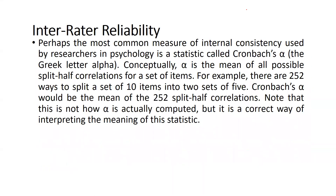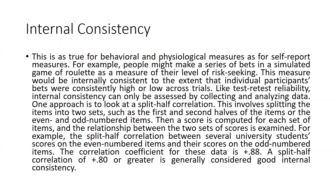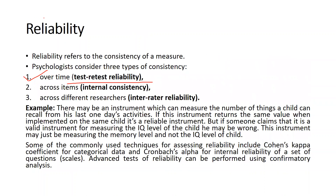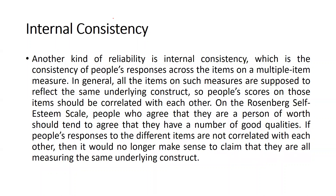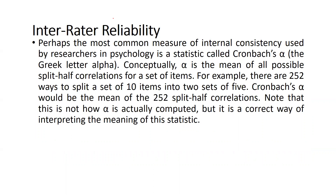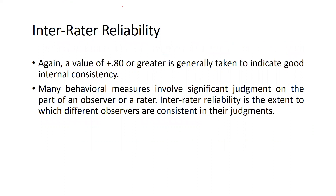The last type of reliability is inter-rater reliability, meaning consistency across different researchers or different people filling in responses. The most common measure of internal consistency used by researchers in psychology is a statistic called Cronbach alpha. Conceptually, alpha is the mean of all possible split-half correlations for a set of items. For example, there are 252 ways to split a set of 10 items into two sets of five, and Cronbach alpha would be the mean of those 252 split-half correlations. A value of 0.80 or greater is generally taken to indicate good internal consistency.